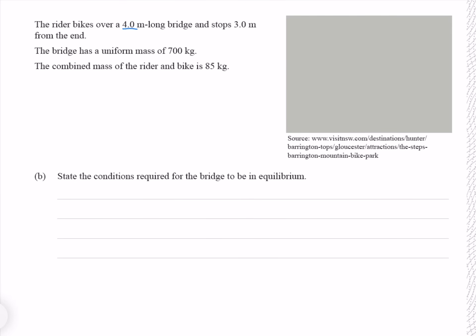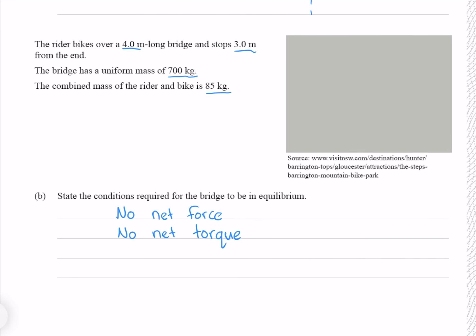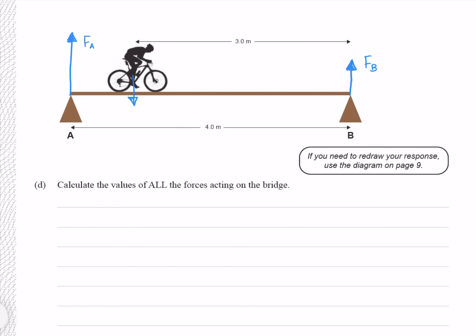The rider bikes over a 4 meter long bridge and stops 3 meters from the end. The bridge has a uniform mass of 700 kg; the combined mass of rider and bike is 85 kg. State the conditions required for the bridge to be in equilibrium: no net force and no net torque. Draw labeled arrows for all forces on the bridge — the support forces FA and FB upward, with FA larger since the rider is closer to that end, the rider's weight downward at their position, and the bridge's weight acting from its midpoint.